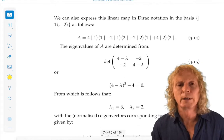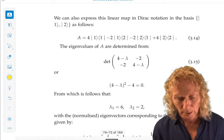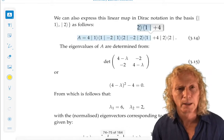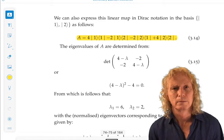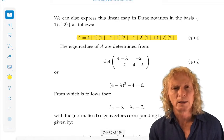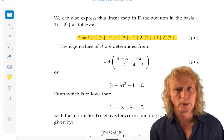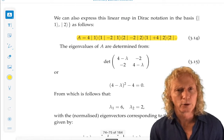And we can represent that operator A in Dirac notation in the basis ket 1, ket 2 in this way. But remember, when we want to compute expectation values and probabilities, we need the orthogonal projection onto the eigenspace corresponding to the eigenvalues. So we need to compute eigenvalues and corresponding eigenvectors.